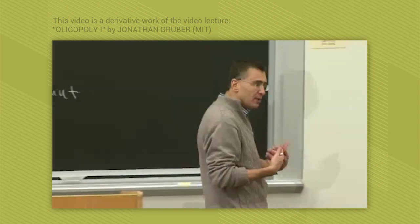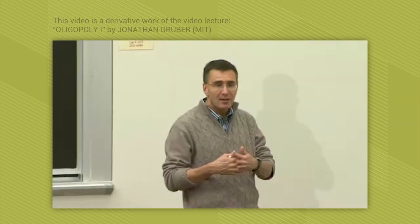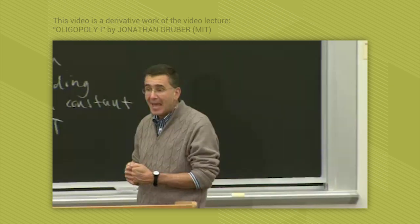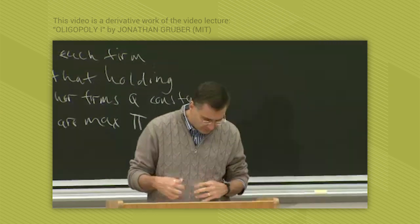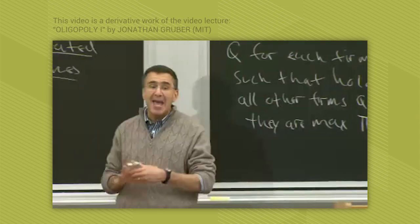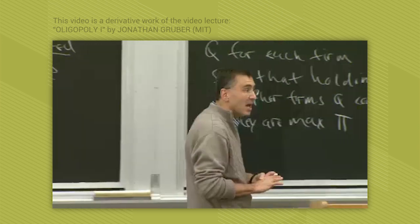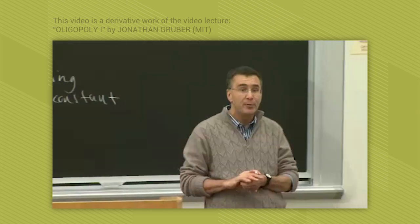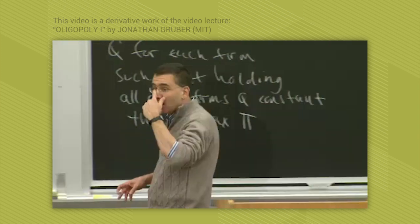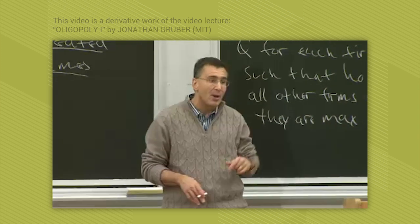If each firm can choose a quantity that makes the market function where this is met, then you're in Cournot equilibrium. Each firm has decided I'm happy with what I'm producing given what everybody else is producing. If everybody feels that way, then you're in a Nash equilibrium or a Cournot equilibrium.